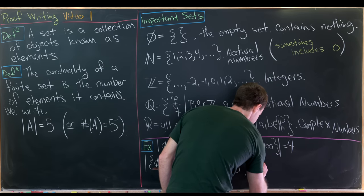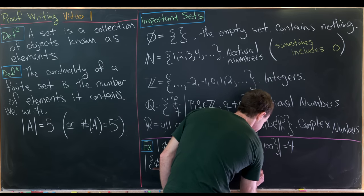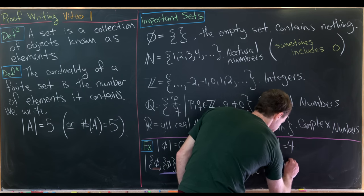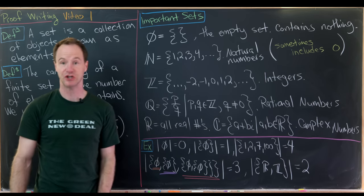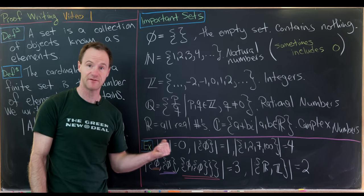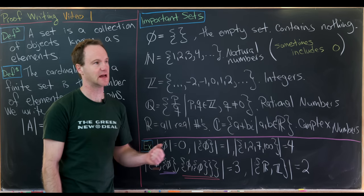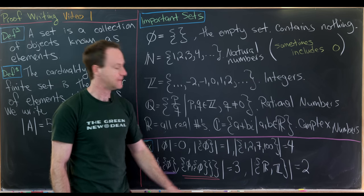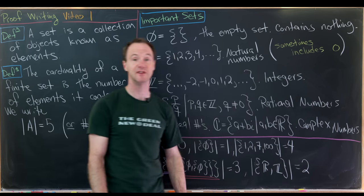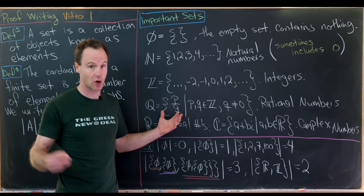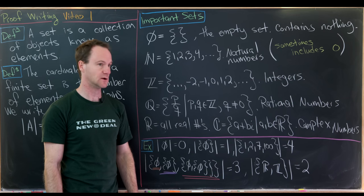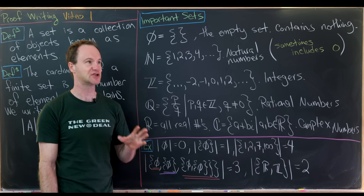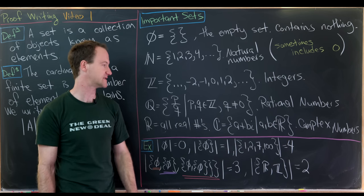What's the cardinality of the set containing the real numbers and the integers? The cardinality of that set is 2. The real numbers is an infinite set and the integers is an infinite set, but we're not asking the cardinality of those — we're asking the cardinality of the set containing each of those two sets as elements. That set has exactly 2 elements, which happen to be infinite sets.